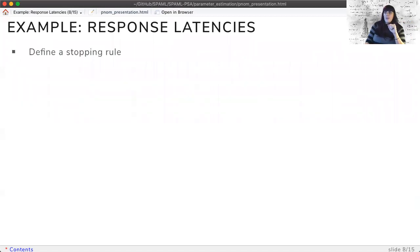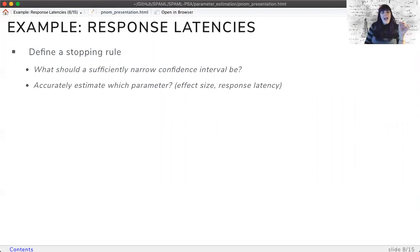First, let's figure out a stopping rule for data collection. What should a sufficiently narrow confidence interval be in a response latency study? What parameter do I accurately want to measure? Since I don't have a hypothesis test in mind for my study, I will use the response latency as my parameter and define sufficiently narrow by standard error, which controls the actual width of a confidence interval.